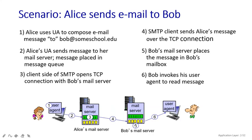Bob will receive the mail placed inside the mailbox, and it will notify the user that there is a new mail. Bob is another user agent sitting with a laptop and he is going to see the message. This is the way of sending a message from one place to another.